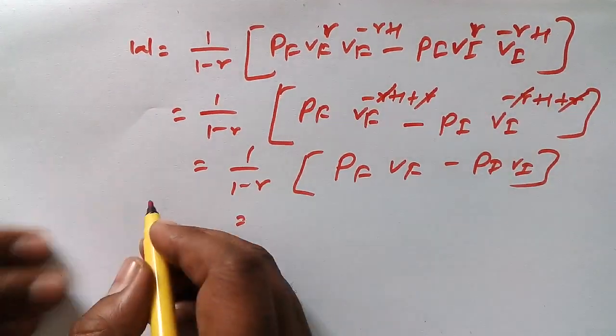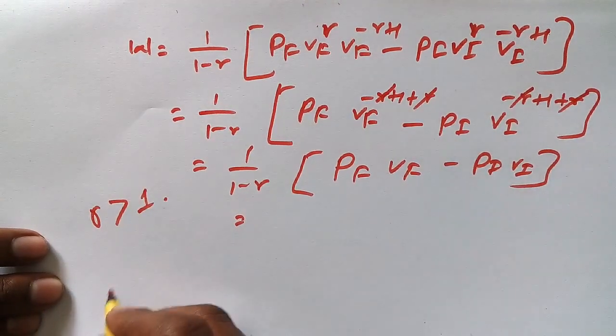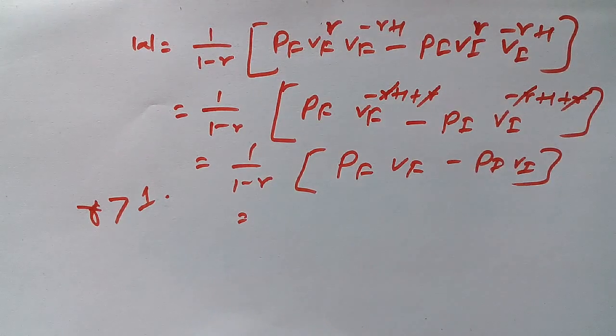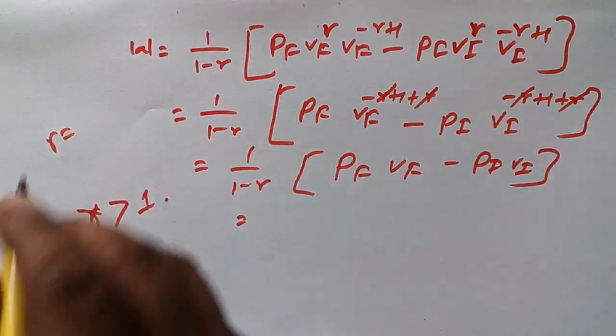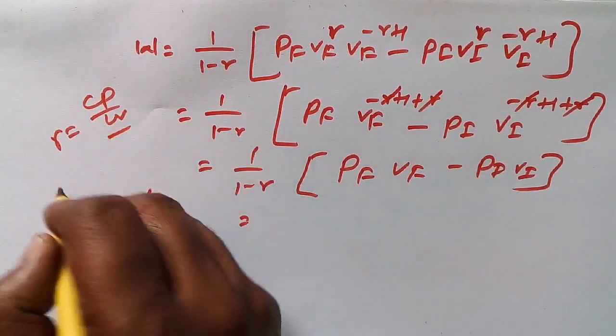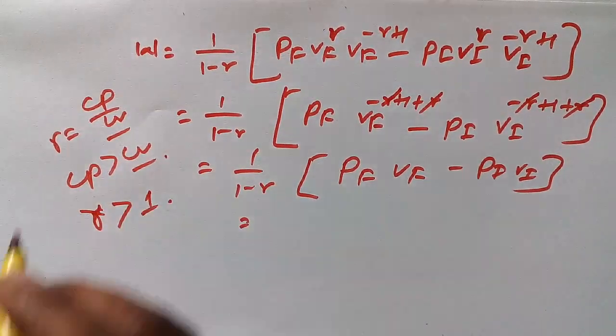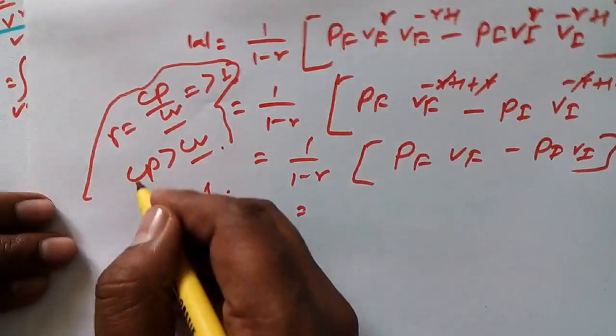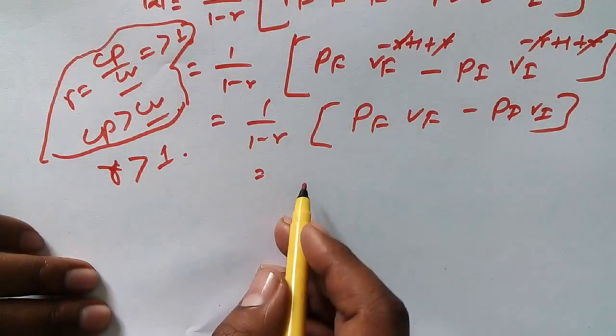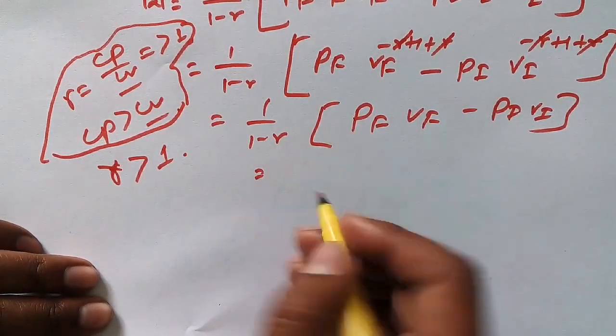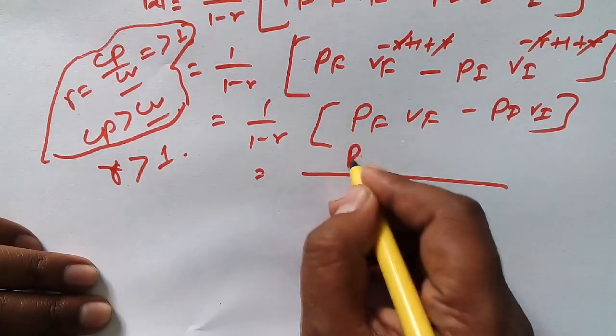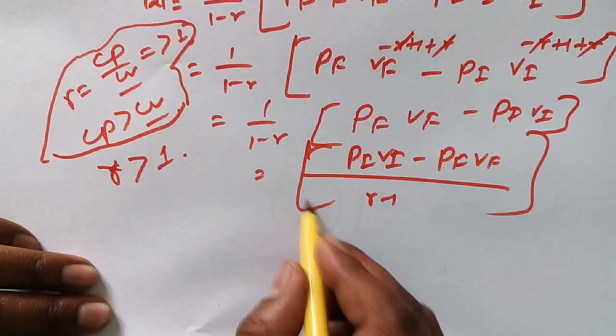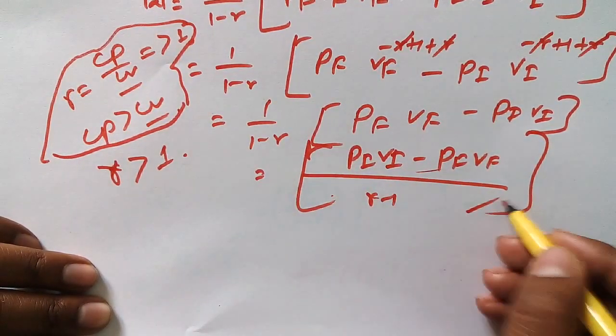Now we know that gamma is always greater than 1. Gamma, the adiabatic index or specific heat ratio, is always greater than 1, because specific heat ratio equals C_P upon C_V, and C_P is always greater than C_V. That's why the ratio must be greater than 1. So we can write this as 1 over gamma minus 1, times P_I V_I minus P_F V_F.